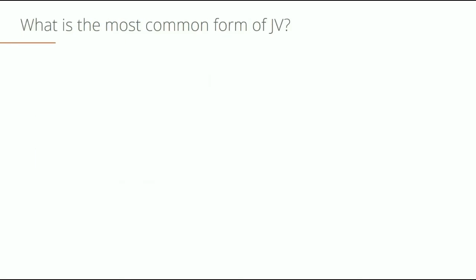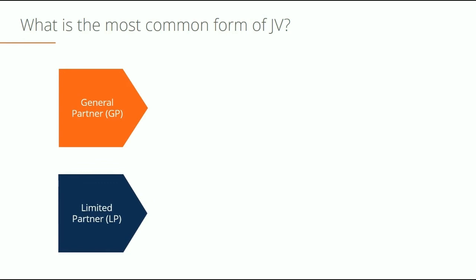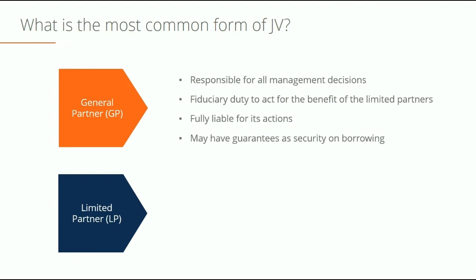The most common joint venture structure for real estate development projects typically consists of a general partner and a limited partner or group of limited partners. The general partner, or GP, is the one leading the charge — responsible for management decisions and overseeing the project. They are typically the firm or party behind the deal, have a duty to act in the best interests of their investors, and may have to put up personal guarantees as security to borrow and fund the transaction.